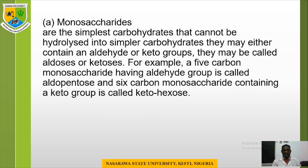Monosaccharides are defined as the simplest carbohydrates that cannot be hydrolyzed into simpler carbohydrates. They may either contain an aldehyde or a ketone group — they are the simplest monomers that result when polysaccharides are hydrolyzed or broken down from their polymeric form to monomeric units. They may be called aldoses or ketoses. For example, a 5-carbon monosaccharide having an aldehyde group is called an aldopentose, and a 6-carbon monosaccharide containing a ketone group is called a ketohexose.